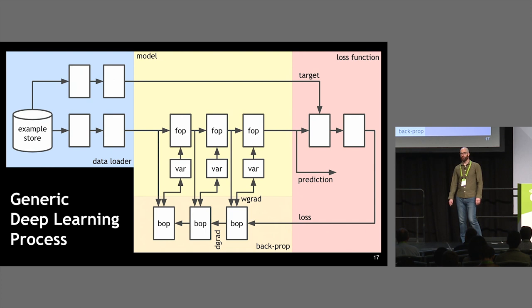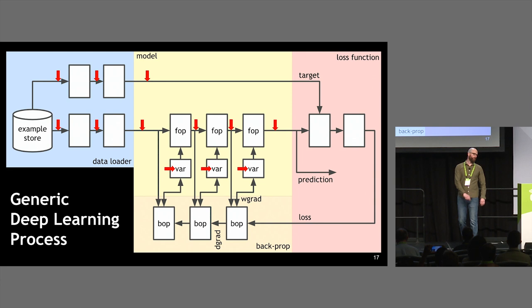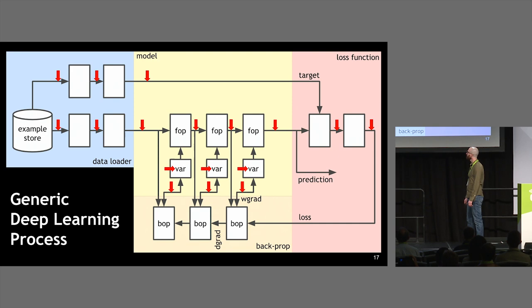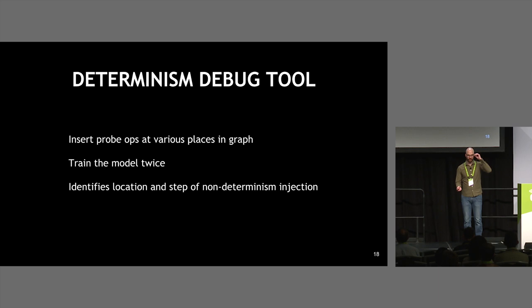This diagram shows a non-recurrent neural network with a data loader, model, and loss function. I wanted to insert probes at various places: trainable variables before training, after every training step, and at end of training — that last one being the measure of whether the whole thing was deterministic. I developed a determinism debug tool that you insert into the graph at the places you want to probe. You run the graph twice and it tells you exactly where non-determinism has been injected, showing you exactly which op or which backprop for a particular op is the source.